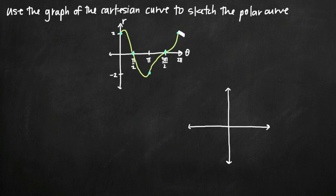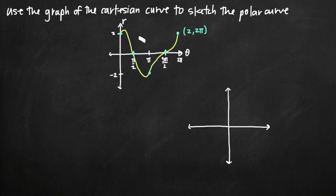We have a point at 2pi, 2. So we just need to translate these points onto the polar coordinate system and then connect them. The first thing you want to do is look at this graph, identify points, and maybe label them. In polar coordinates, r is always first and then theta, so we have an r value of 2 and a theta value of 2pi. Either way, we're going to go ahead and translate them onto our polar coordinate system.